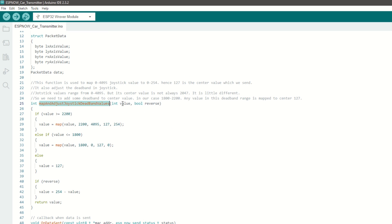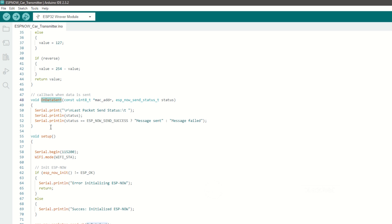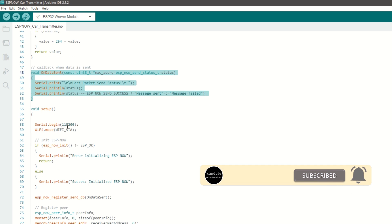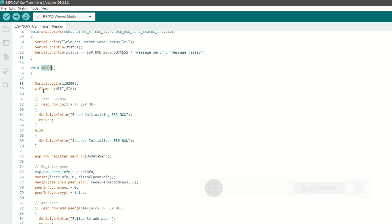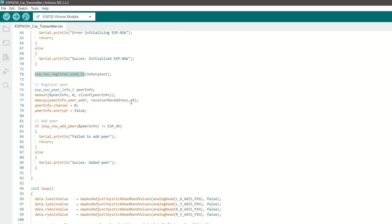We have defined map and adjust joystick deadband values function which is used to map the values from 0 to 4095 to 0 to 254. Hence 127 is the center value to be sent. We have defined on data sent callback function which will be called when data is sent using ESPnow protocol. Inside setup function, initialize the ESPnow. Now register the callback function. Then we need to set up the receiver pair info and add it to ESPnow.